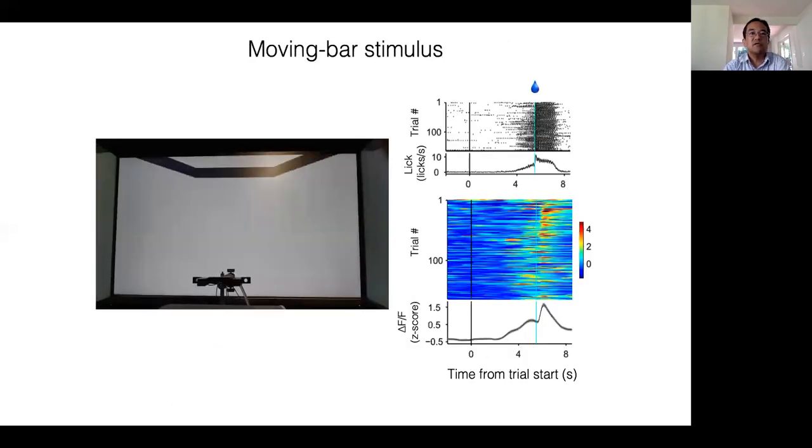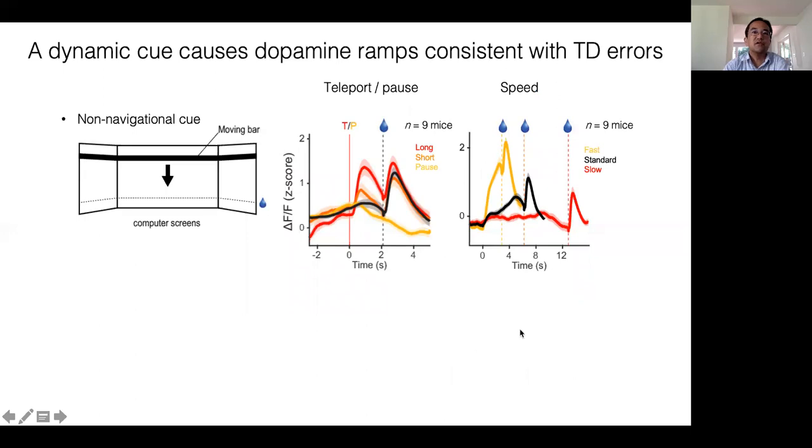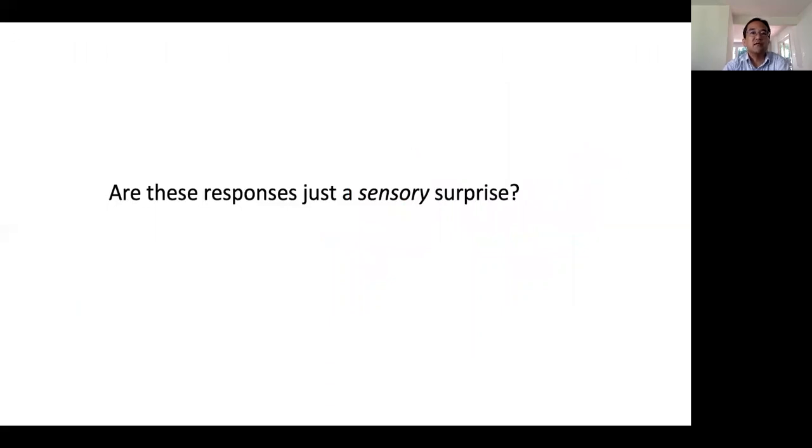We next examined whether we can simplify the task. We used a horizontal bar that moves from the top to the bottom, and we gave water reward when the bar reached a certain position on the screen. Even in this task, which eliminates navigational component, we observed the gradual ramp of dopamine response. We further tested the nature of ramping by performing teleport, pause, and speed manipulation in this task. As you can see, dopamine ramping caused by a moving bar conformed the same critical predictions of TD error as in the navigational task.